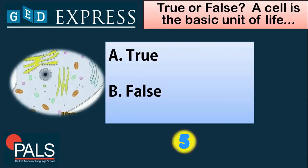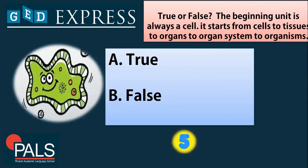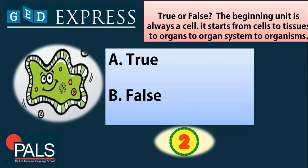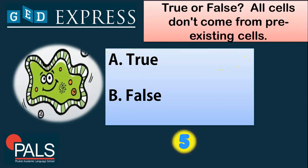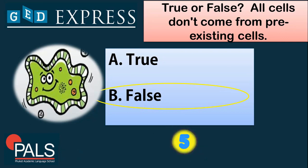Next, we have true or false questions. A cell is the basic unit of life — the right answer is true. Next: the beginning unit is always a cell; it starts from cells to tissues, to organs, to organ system, and to organism — that is also true, as it is stated under the cell theory. Next: all cells don't come from pre-existing cells — that statement is false, because according to Rudolf Virchow, all cells come from pre-existing cells.